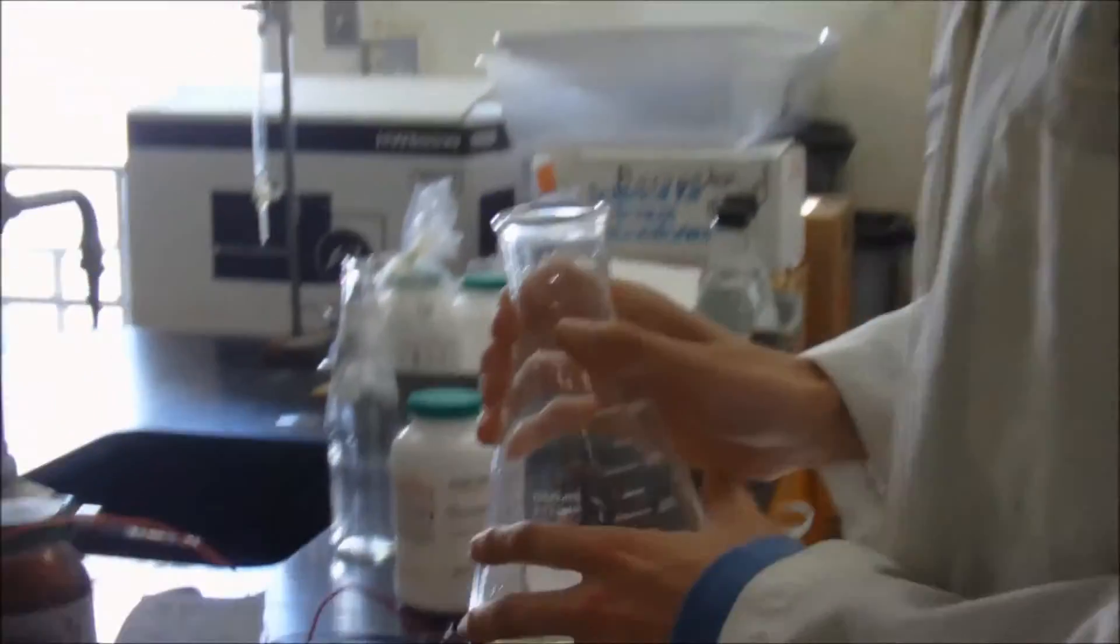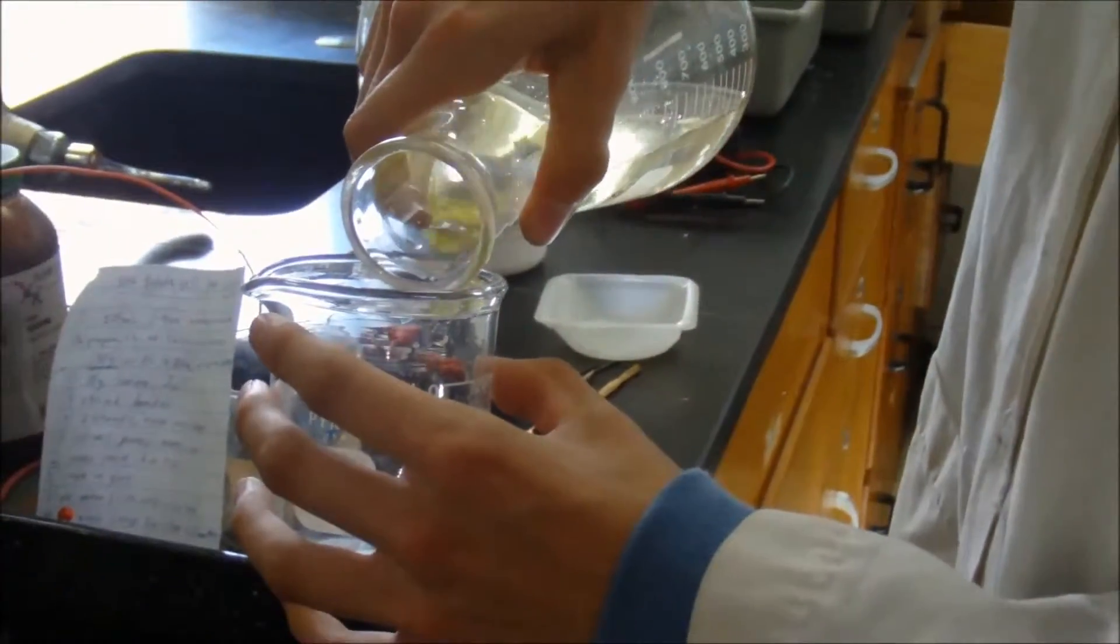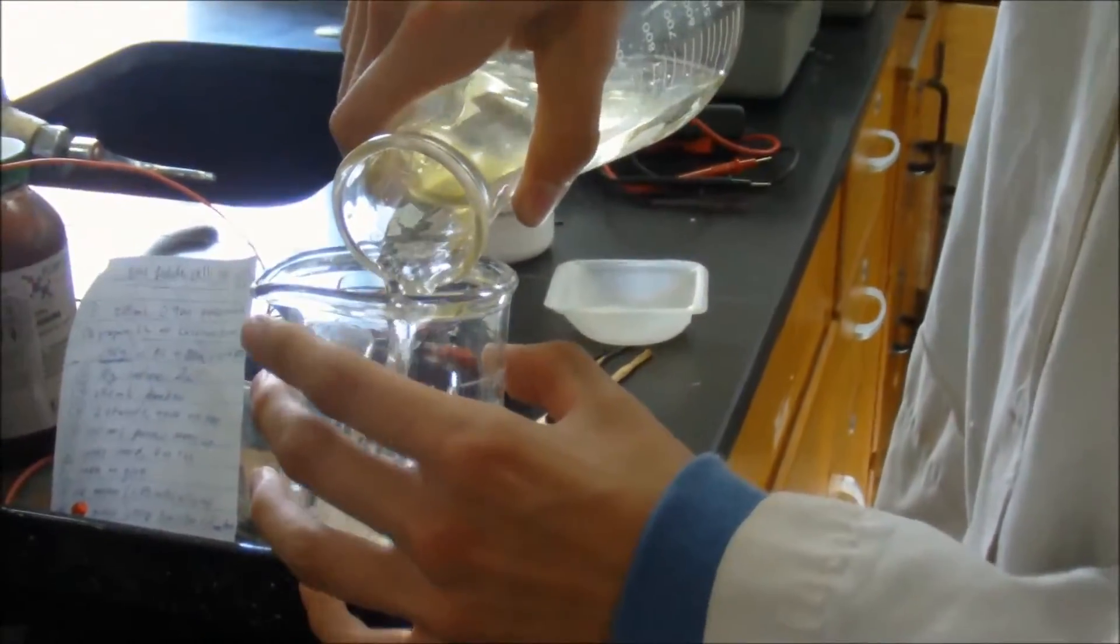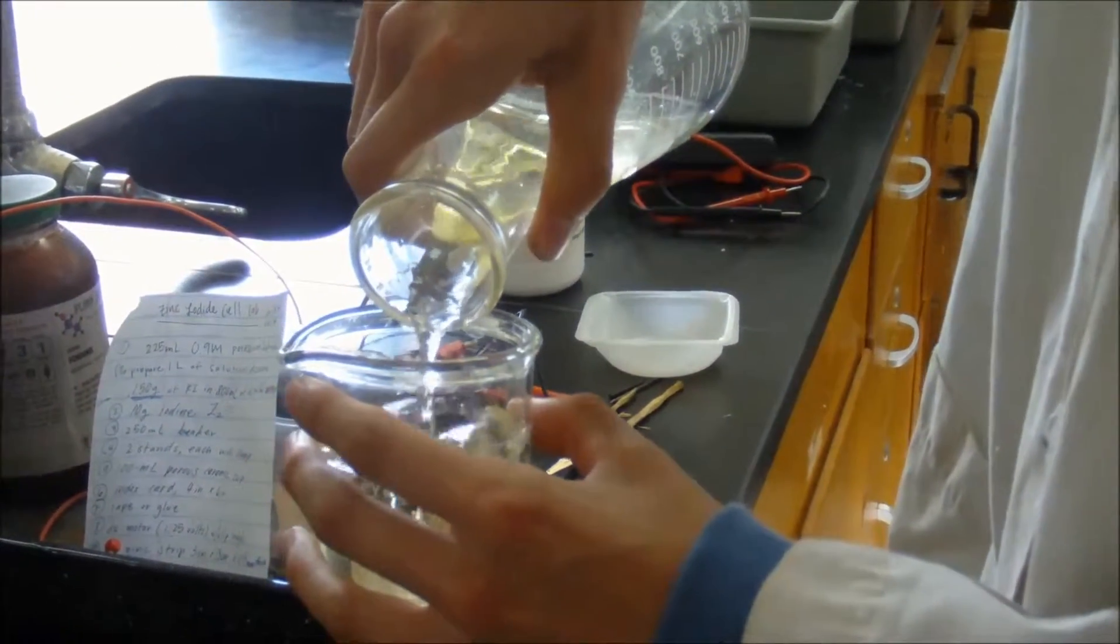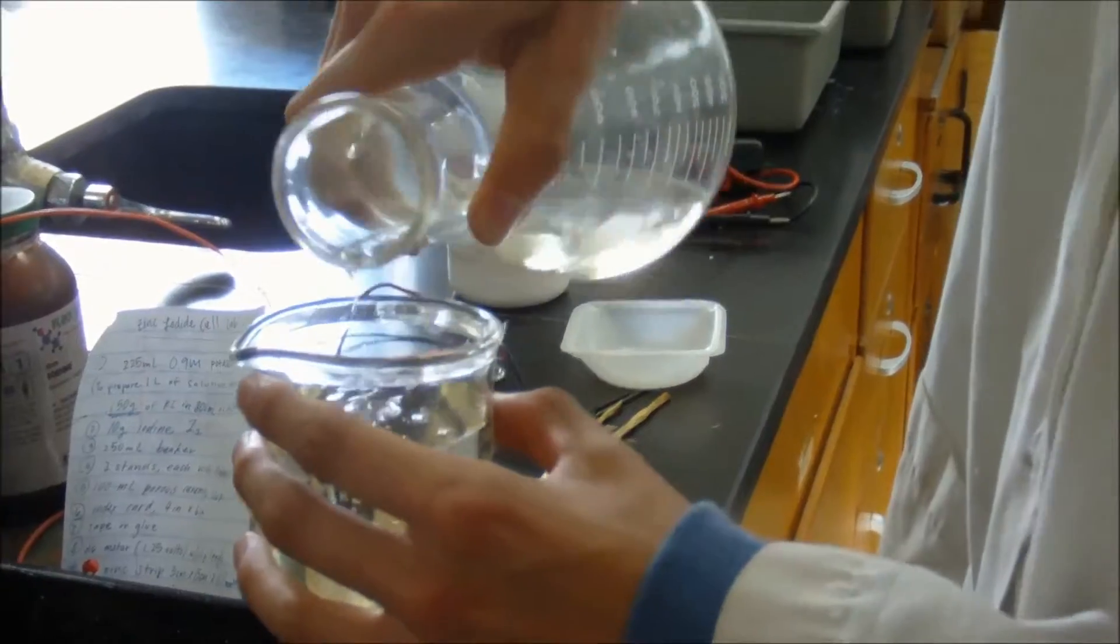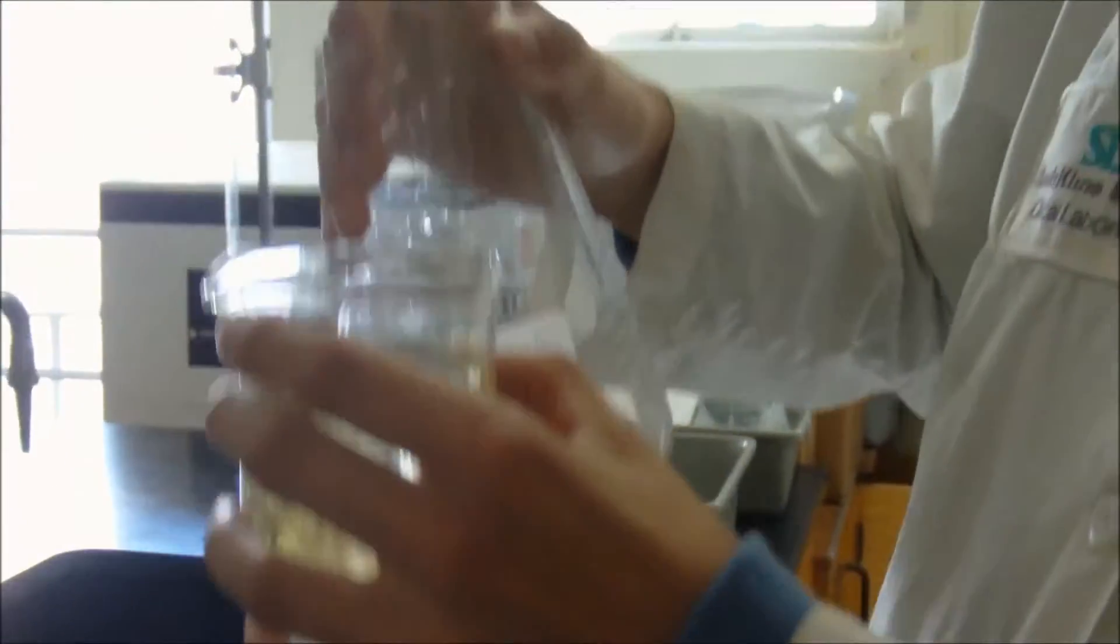What I have here is a 0.9 molar solution of potassium iodine. I'm going to fill the beaker up to 200 milliliters. I measured the volume of the flask and it is approximately 200 milliliters.